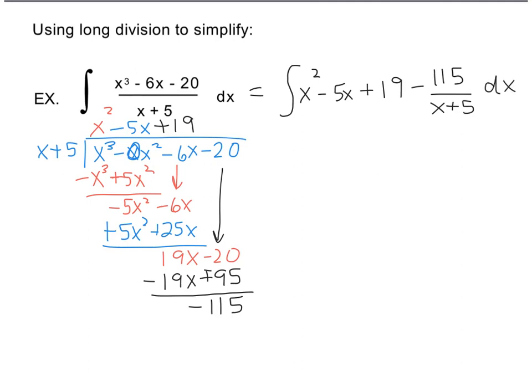Well, that's basically a polynomial with a natural log. So when you go ahead and take the integral of this, you're going to have x to the third over 3 minus 5x squared over 2 plus 19x minus 115 times the natural log of the absolute value of x plus 5 plus c. So that's why we divide it, to make it into something easier to take the integral.